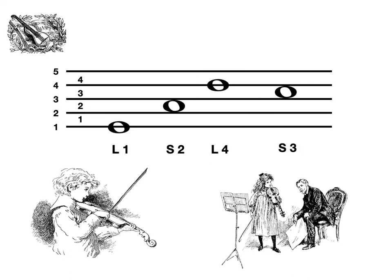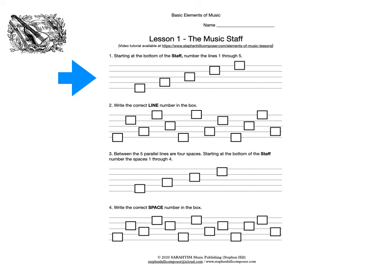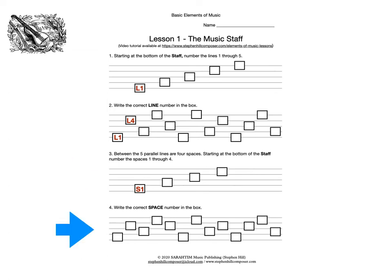For the worksheet, you're just going to fill in the line number or the space number. Number one: that box is sitting on line one. Number two: that box is sitting on line four. Number three: that box is sitting on space one. Number four: that box is sitting on space three. We always count from the bottom up.